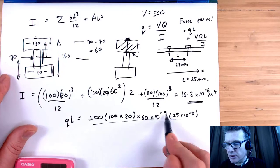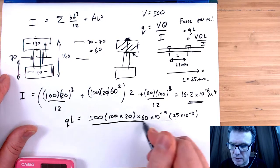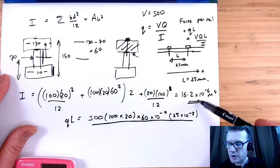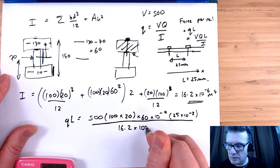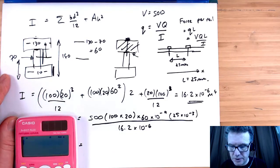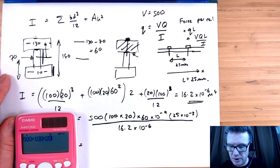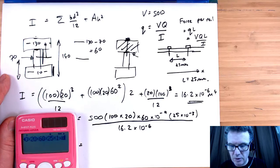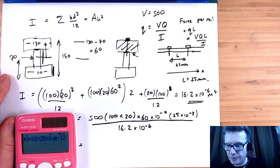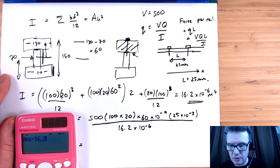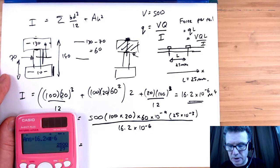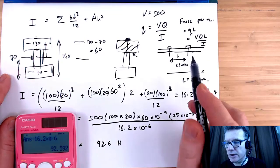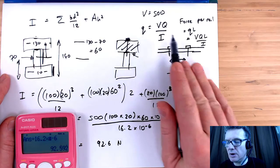I'm going to combine this all together making it times 10 to the minus 12. So that's the V done, the Q done, the L done, the I we worked out here. So 500 times 100 times 20 times 60 times 25, and then I want to times that by 10 to the minus 12, divided by 16.2 times 10 to the minus 6.